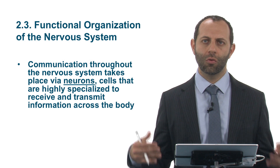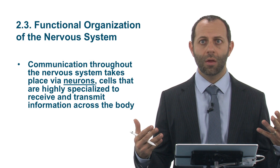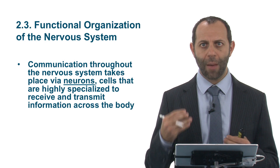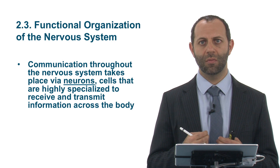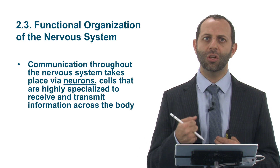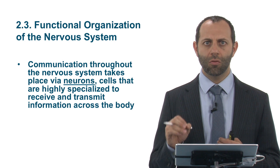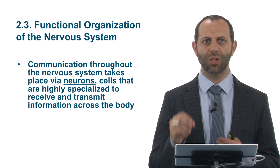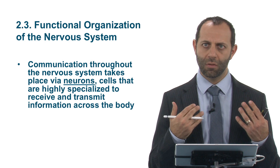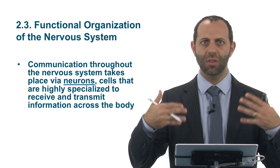In order for us to function and operate the way that we do, there is behind the scenes a very rapid and efficient communication system. This is known as the nervous system. Communication occurs within the nervous system via neurons — cells that have highly specialized tasks and methods for both receiving and transmitting information all across the body.